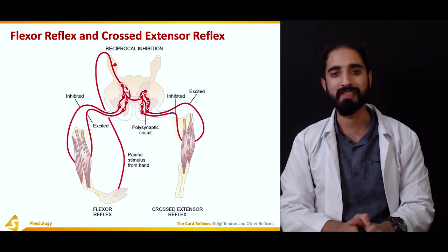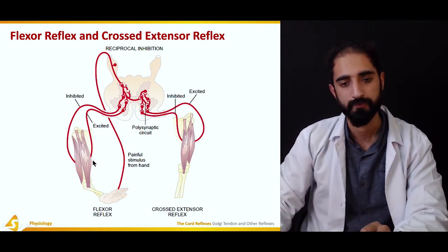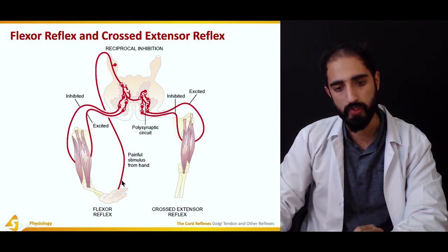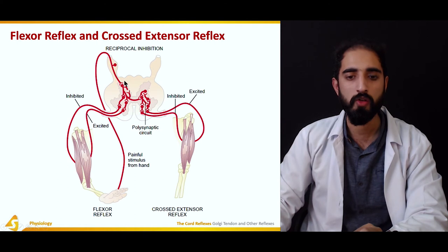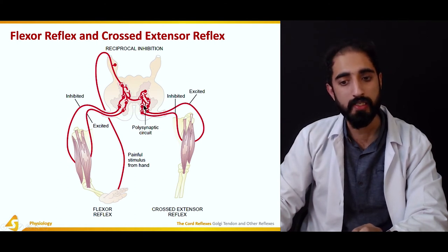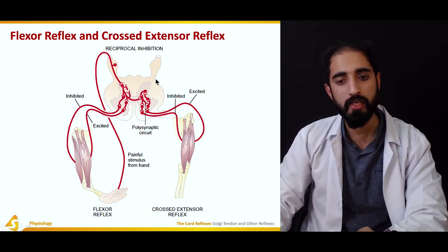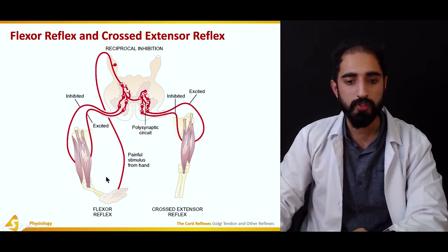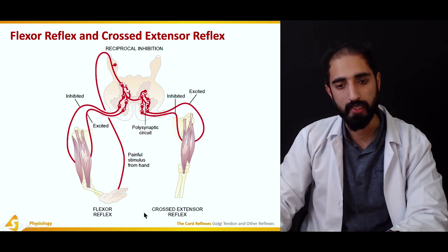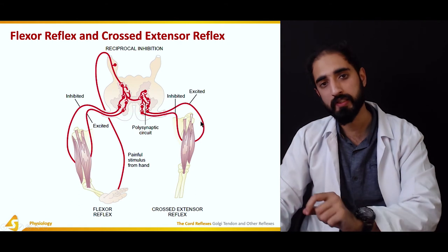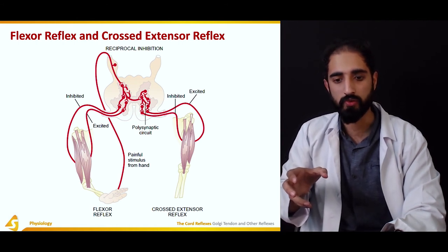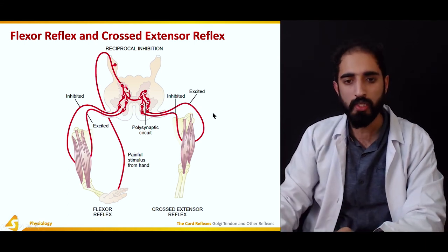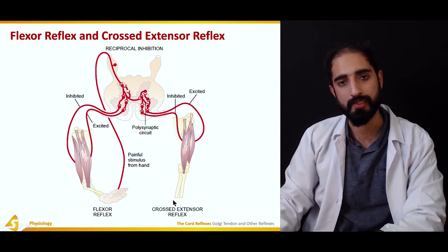There is another reflex occurring at the same time, associated with the flexor reflex. In this reflex, a painful stimulus from the hand travels via the sensory neuron to the spinal cord, and then the interneuron travels towards the opposite side, activating the antagonist (the extensor) and inhibiting the agonist (the flexor). So a painful stimulus to the right hand leads to activation of the extensors on the opposite side. This further movement of the body away from the painful stimulus is known as the crossed extensor reflex.